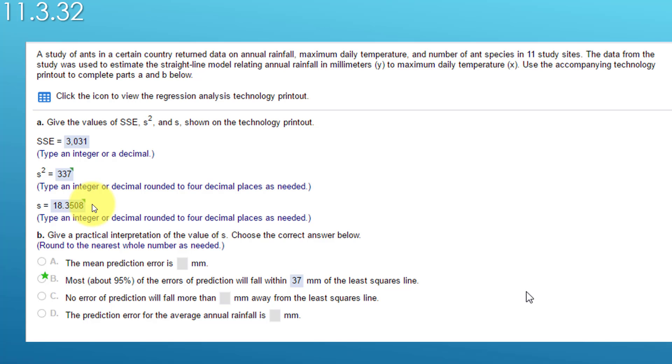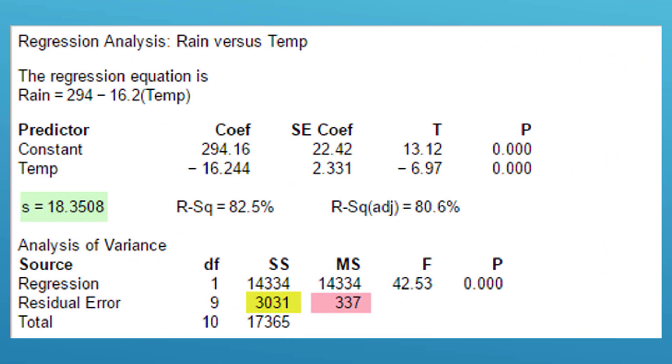In this problem they gave us the output from some software, I don't know what software they use, might be Minitab. Looking at the software output for regressions, they're similar, and in this case the part we want to look at is the analysis of variance, the ANOVA part down at the bottom on this output.